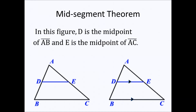In this figure, D is the midpoint of line segment AB and E is the midpoint of line segment AC. So by definition, D divides line segment AB into two equal halves. Therefore, line segment AD is congruent or equal to line segment DB. Also, E is the midpoint of line segment AC, so line segment AE is congruent to line segment EC.